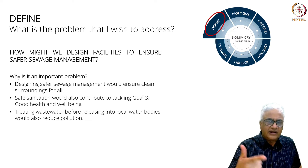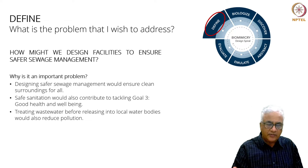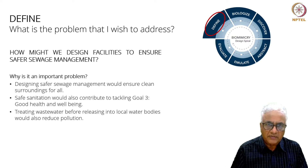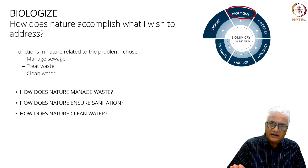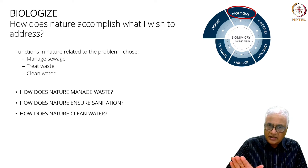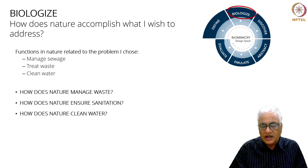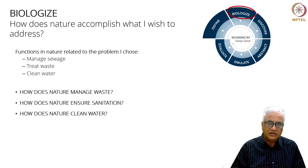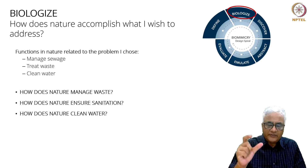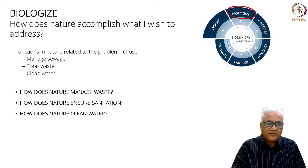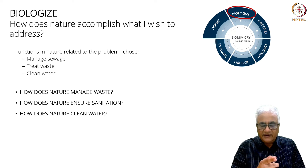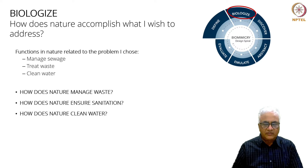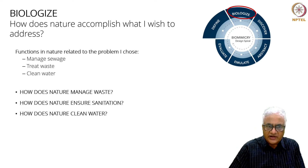Why is it an important problem? I don't think anyone needs to argue that it's not an important problem, and she's got enough reasons to support it. Next is biologize. Biologize means asking the question: how does nature accomplish what I want to accomplish? What are the three functions that emerge out of the problem statement? The three functions are manage sewage, treat waste, and clean water — where clean is a verb, not a noun.